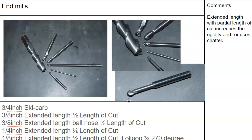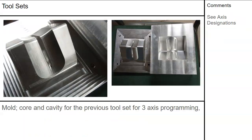There are different end mills: extended length ball end mills, shoulder relieved shoulders, and the lollipop — a 270-degree for undercuts. Different geometries that we can work with. When we talked about the mold core cavity for a three-axis program, that tool set was to do this geometry, and when the two pieces go together, it made that shape.